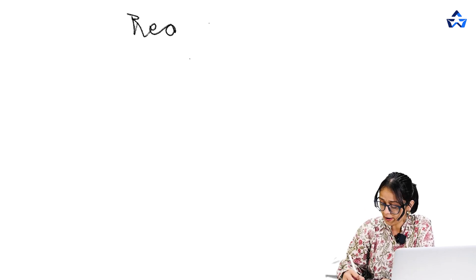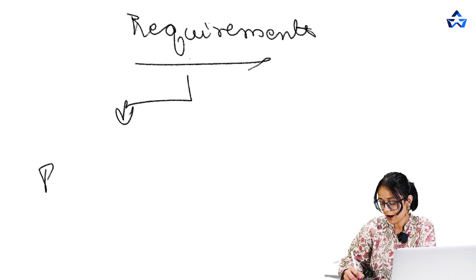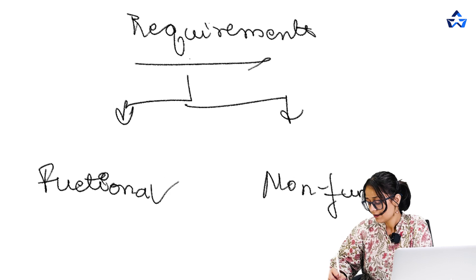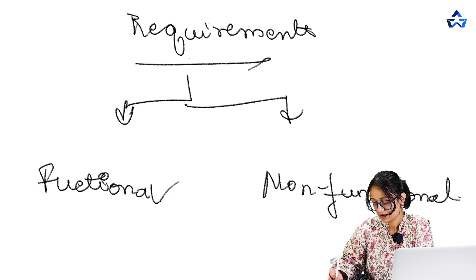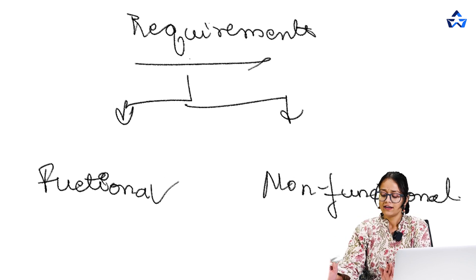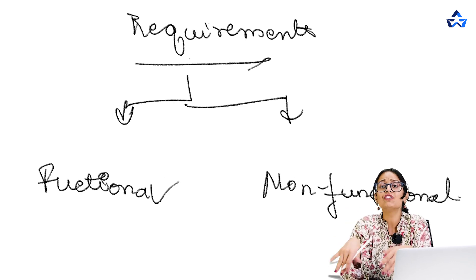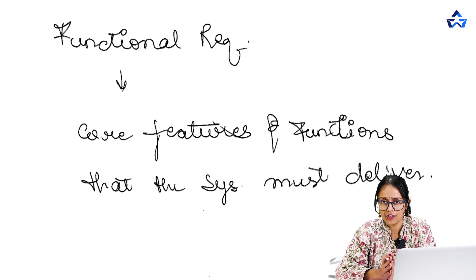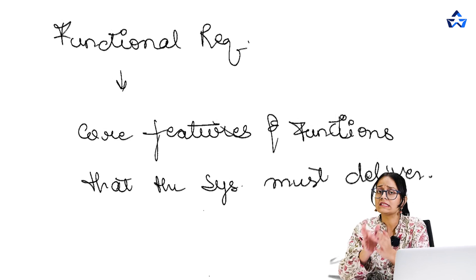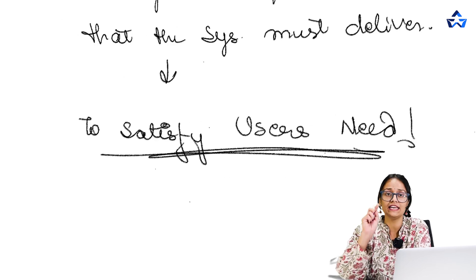Now let's move ahead to understanding requirements. When we talk about system design, there are basically two types of requirements: number one is functional requirements, and number two is non-functional requirements. Functional requirements are the core features and functions that a system must deliver in order to satisfy users' needs.